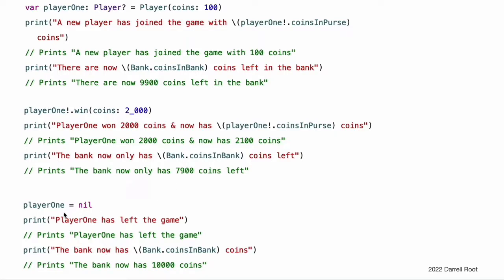The player has now left the game. This is indicated by setting the optional playerOne variable to nil, meaning no player instance. At the point that this happens, the playerOne variable's reference to the Player instance is broken. No other properties or variables are still referring to the Player instance, and so it is deallocated in order to free up its memory. Just before this happens, the deinitializer is called automatically and its coins are returned to the bank.